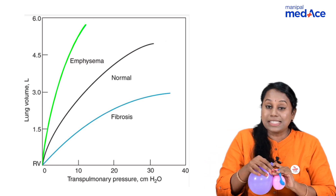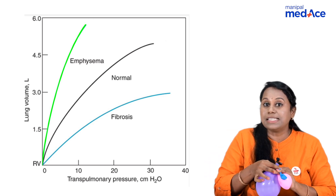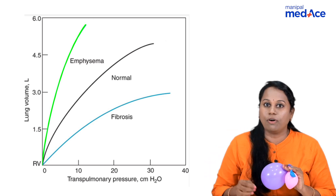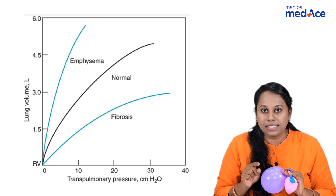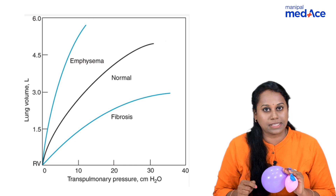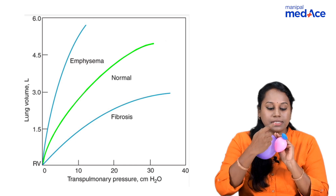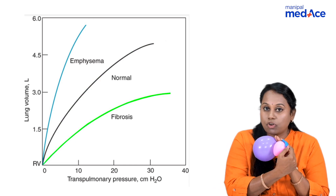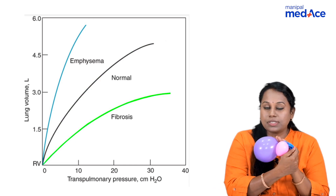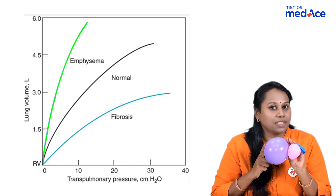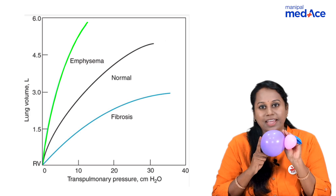So, this is an easy understanding of lung diseases in the compliance curve — normal compliance, decreased compliance in fibrosis, and increased compliance in emphysema. Thank you.